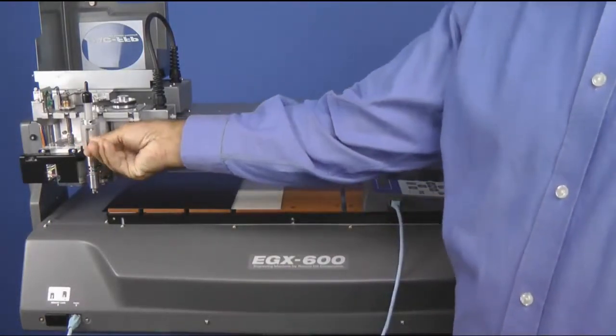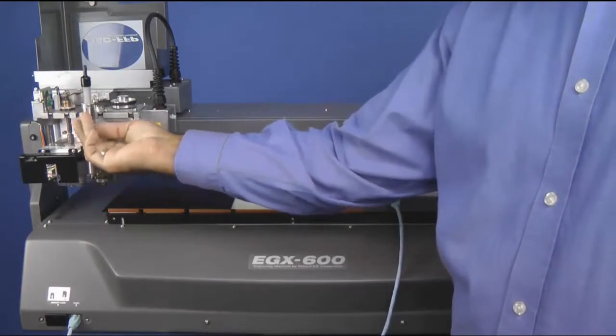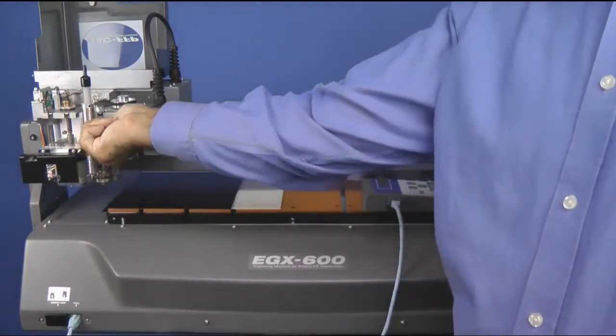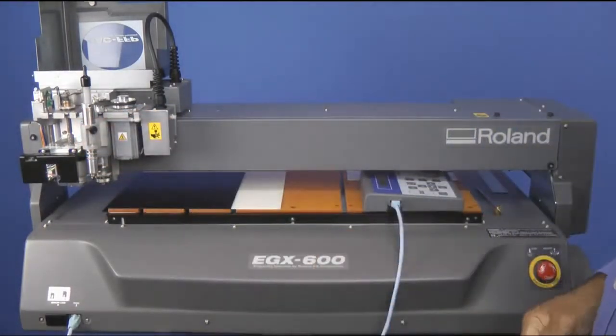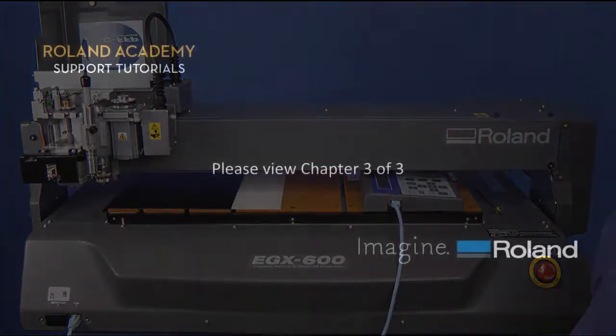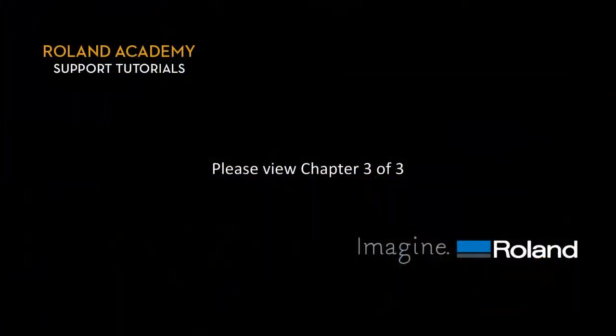We'll now loosen the screw for the Auto Pen and put it back in the up position and lock it in place. Please continue to Chapter 3 of 3.